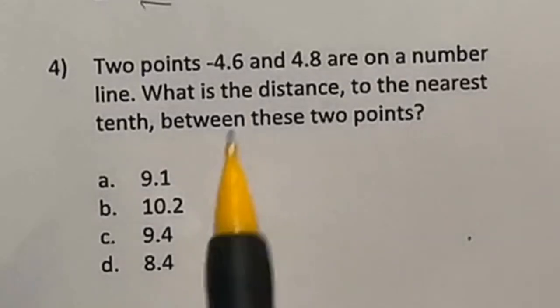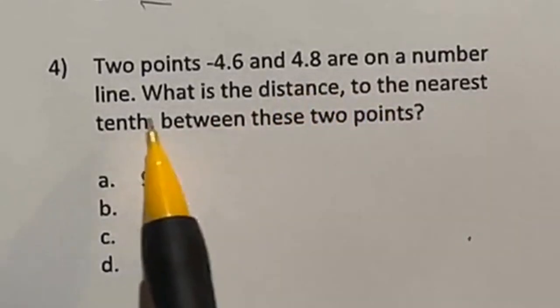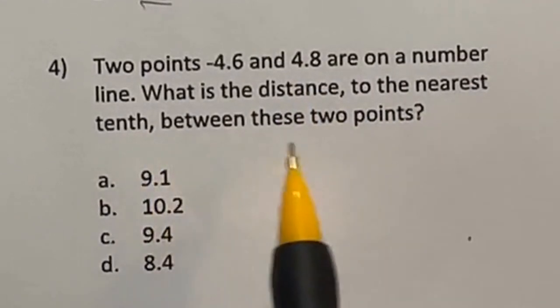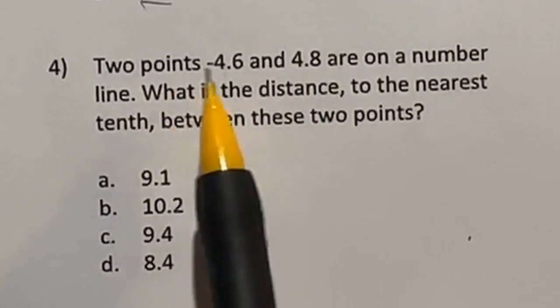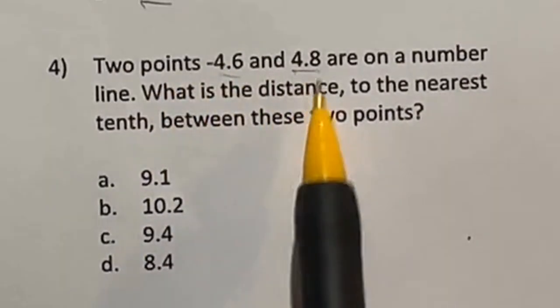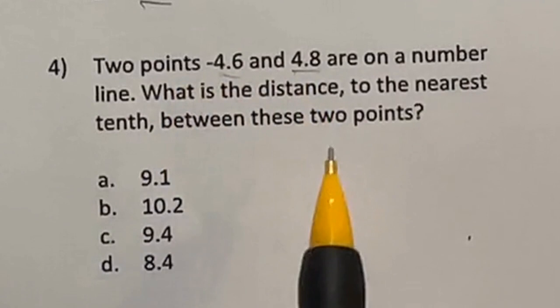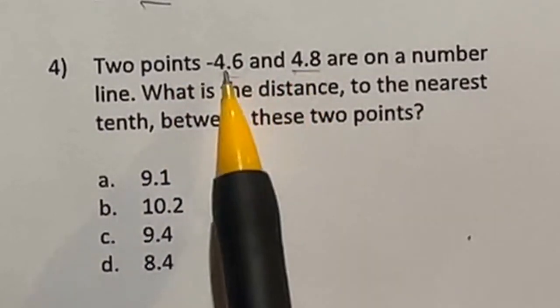Two points, negative 4.6 and positive 4.8 are on a number line. What's the distance to the nearest tenth between the two points? Well, we have to go from 4.8 to zero and then the negative 4.6. So essentially, we're adding these two numbers together here without the negative. So in this case,